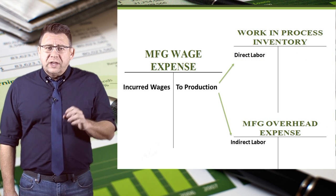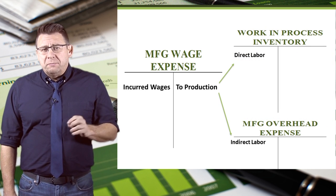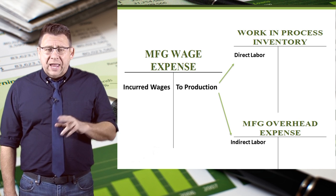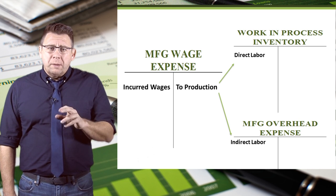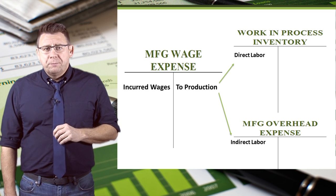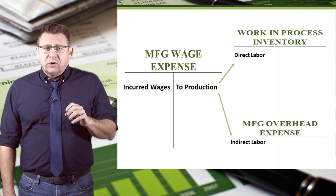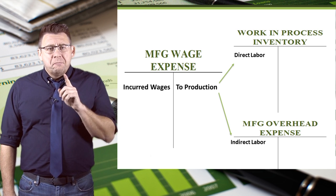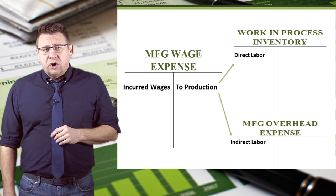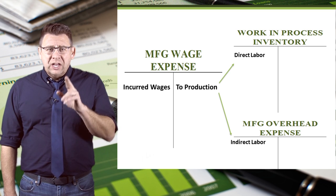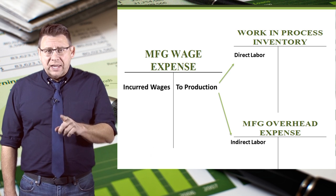To do this, we credit manufacturing wages and debit WIP for the direct labor. Manufacturing wages are credited and manufacturing overhead expense is debited for indirect labor.